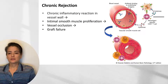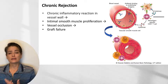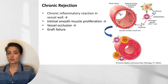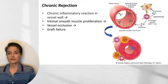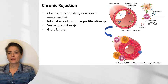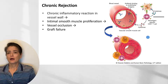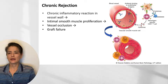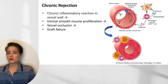Chronic rejection involves a very different mechanism — a chronic inflammatory reaction in the vessel wall that causes intimal smooth muscle proliferation, leading over time to occlusion of the vessel, downstream ischemia, and graft failure. The mechanism is less clear than for acute or hyperacute rejection; the current belief is that CD4-positive T cells elaborate cytokines that stimulate vascular smooth muscle cell proliferation, with a contribution from antibody binding to endothelial antigens.